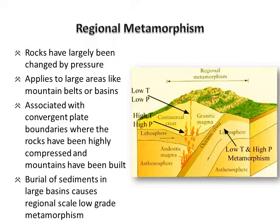Regional metamorphism applies to large areas like basins or mountain belts, where the rocks have been largely changed by pressure. When rocks undergo intense compression due to continent-to-continent collision and mountain building, metamorphism will take place. There is lots of pressure and some heat when continents collide and mountains are built. In basins, the bottom of the rock pile is buried and subject to higher temperatures and pressures as sediments accumulate over time, causing regional metamorphism.